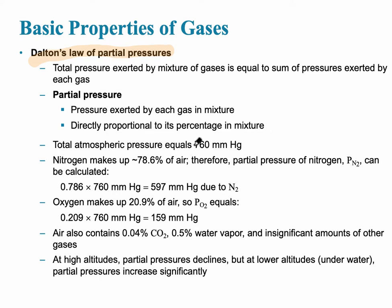This takes into account atmospheric pressure, which is 760 millimeters of mercury. Approximately 78-79% of that air is nitrogen, and that would be calculated by multiplying the percent as a decimal times 760 millimeters of mercury, giving 596-597 mmHg. We're more concerned with oxygen, which is about 21% of our air, calculated to approximately 159-160 millimeters of mercury.